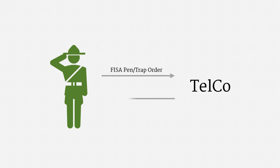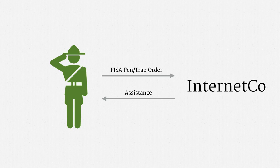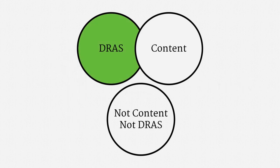The telecom provides some assistance in obtaining prospective communications metadata. The recipient of the order could also be an email provider or an internet service provider. Just like an ECPA pen trap order, a FISA pen trap order applies to all forms of electronic communications. FISA even borrows ECPA's categories of information — a FISA pen trap order covers dialing, routing, addressing, and signaling information. And it doesn't cover content.